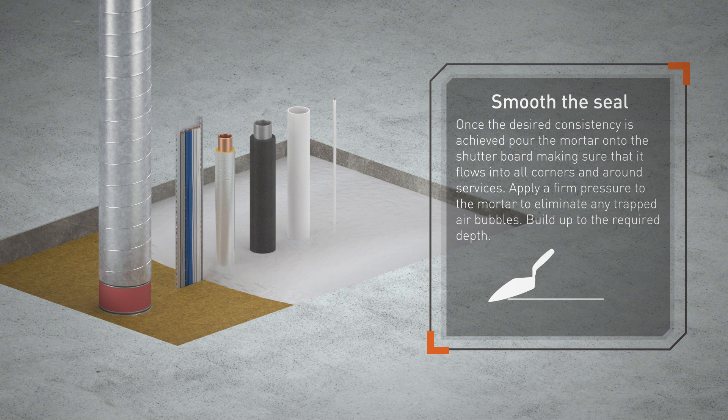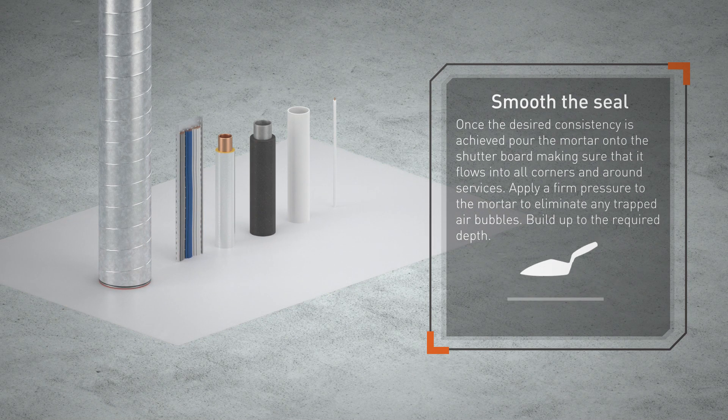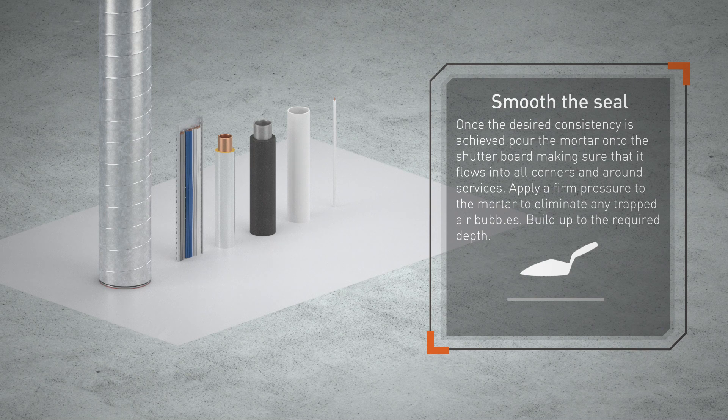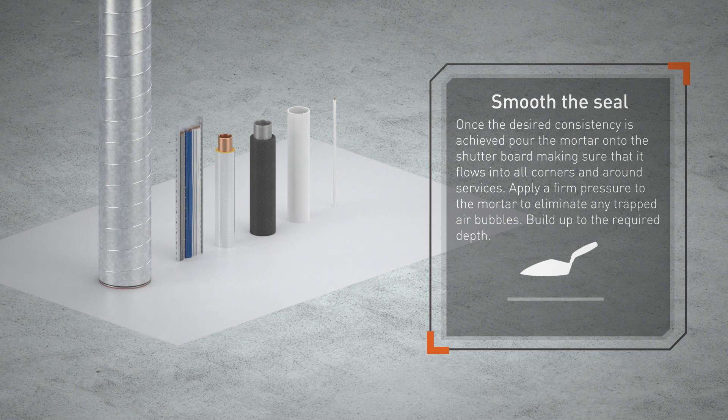Once the desired consistency is achieved, pour the mortar onto the shutter board making sure that it flows into all corners and around surfaces. Apply firm pressure to the mortar to eliminate any trapped air bubbles. Build up to the required depth.